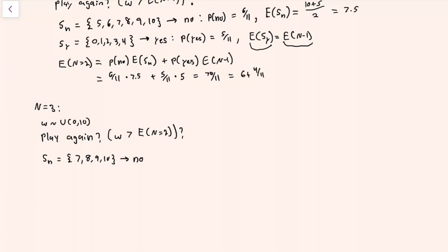These are the values of W that are higher than the expected value of playing this game again with only two rounds left, which is what we found earlier. The probability of this happening is 4 out of 11. The expected value in this case, treating the outcome as uniform from 7 to 10, is 10 plus 7 over 2.